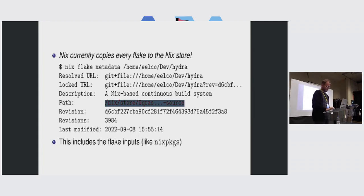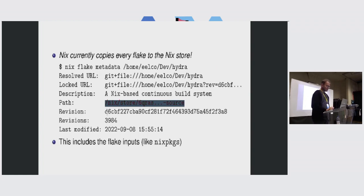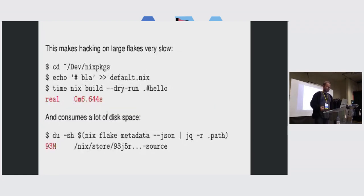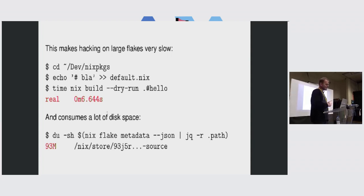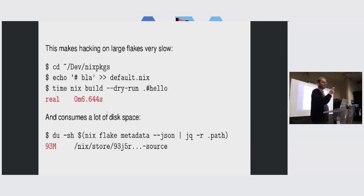This is not very scalable, and this is not just your top-level flake — it's also all the dependencies, like nixpkgs. So you end up with a lot of copies of nixpkgs in your Nix store. Disk space may be cheap, but it's not that cheap. In particular, this makes hacking on large flakes very slow. nixpkgs is not even that huge, but it's already big enough that running nix build . #hello takes several seconds because it needs to copy the entire nixpkgs flake to the Nix store, and it costs a lot of disk space.